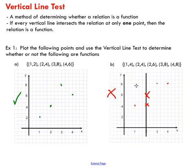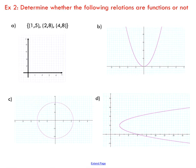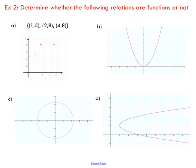Keep that in mind — if you've got a pencil or something handy and you've got a graph, you can just take your pencil, turn it into a vertical line, and pass it over your relation. If you see a situation like this, your relation is not a function. Now, determine whether the following relations are functions or not. We're going to take a vertical line and pass it through our points.